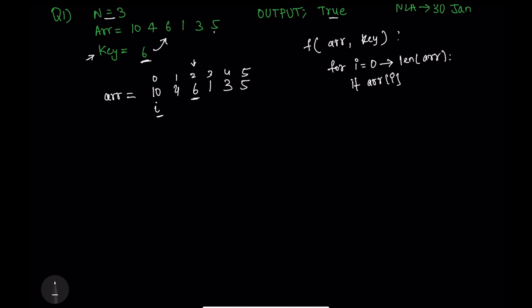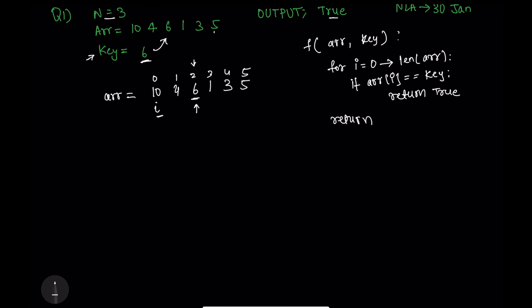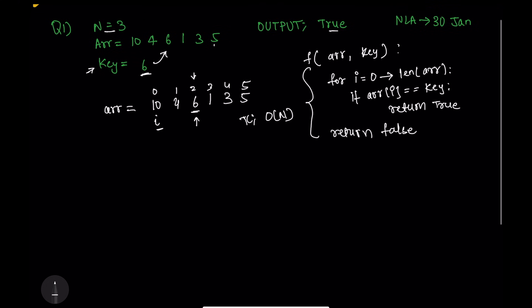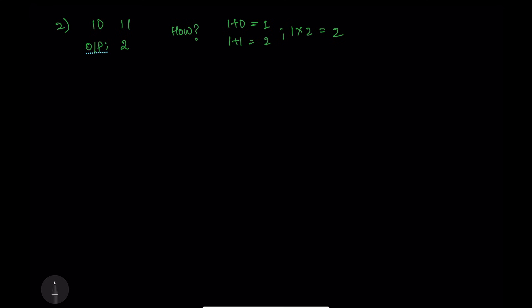If array[i] is equivalent to the given key coming from the function, just return true — the question doesn't ask us to return an index, just true or false. After traversing the whole array, if the key is not found, return false. This gives a time complexity of O(n) and we're not consuming any extra space. This question takes about two minutes to solve.